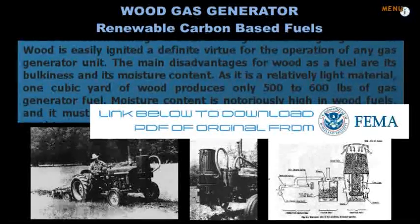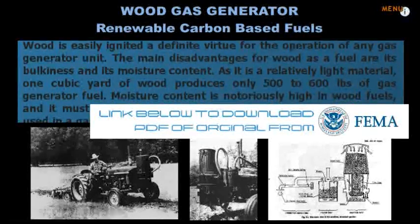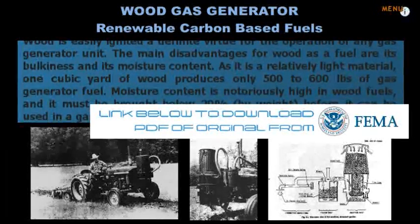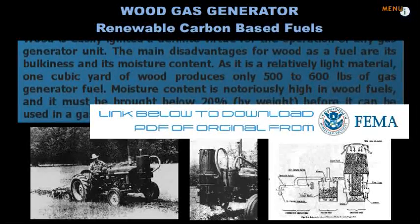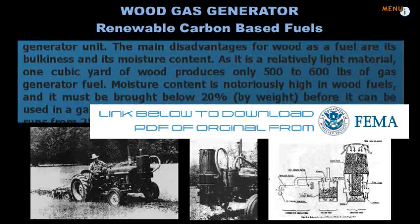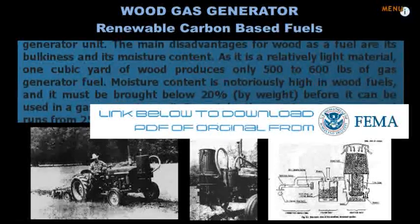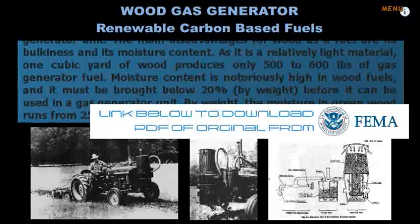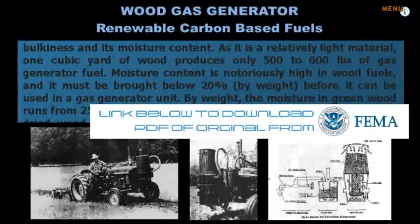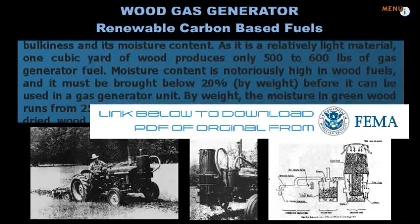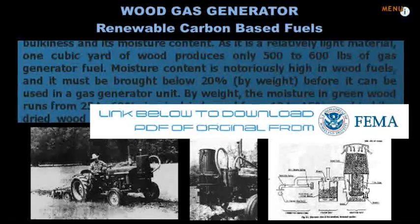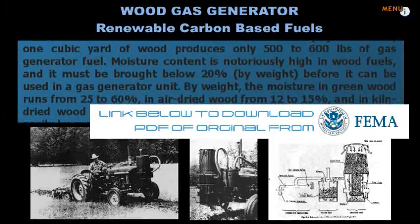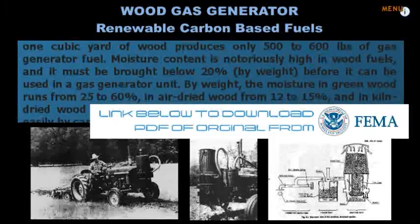As it is a relatively light material, one cubic yard of wood produces only 500 to 600 pounds of gas generator fuel. Moisture content is notoriously high in wood fuels, and it must be brought below 20% by weight before it can be used in a gas generator unit.